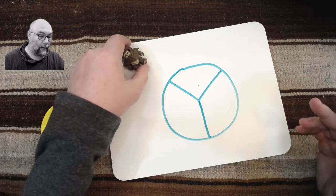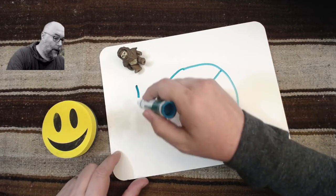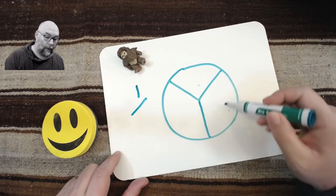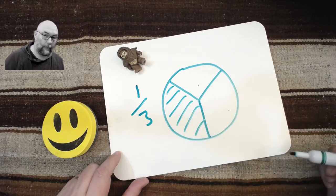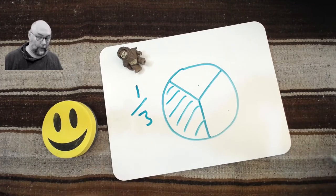How much did he get? He got one of these thirds. He got this piece. Makes sense? Let's do another one.